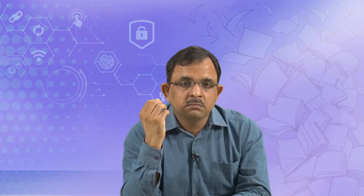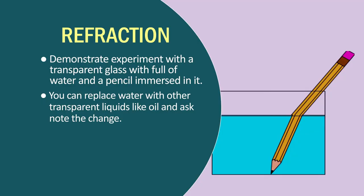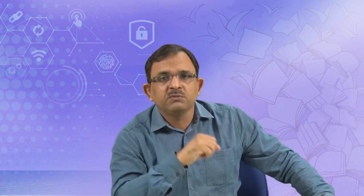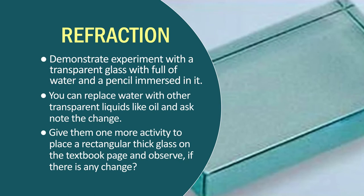Give students different transparent liquids and ask: if you put the pencil at the same angle in each liquid, is the tiltedness of the dipped pencil the same or different? They will tell you it is different — the angle is different for each medium. You can give them one more activity: give them a rectangular thick glass piece and ask them to put it on a textbook page and observe. They may tell you that the words below the glass slab look like they are coming up and appear larger.